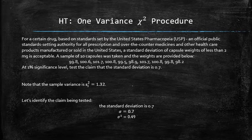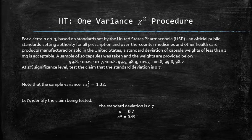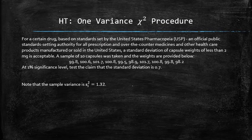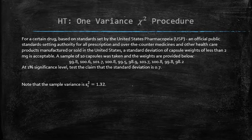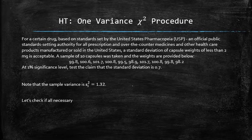Since the claim is about the population variance, we will use the one-variance chi-square procedure. Before we begin the one-variance chi-square procedure, let's check if all necessary assumptions are satisfied.